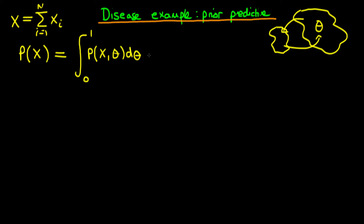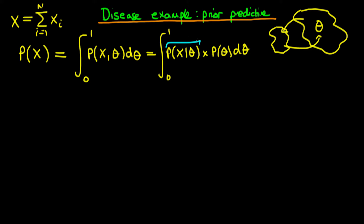We can rewrite this using the rule of conditional probability as the integral from 0 to 1 of the likelihood — the probability of x given theta — times the probability of theta, our prior, d theta. In this example the likelihood is going to be a binomial function, and the prior we're going to use, because of its conjugacy property, is a beta prior.